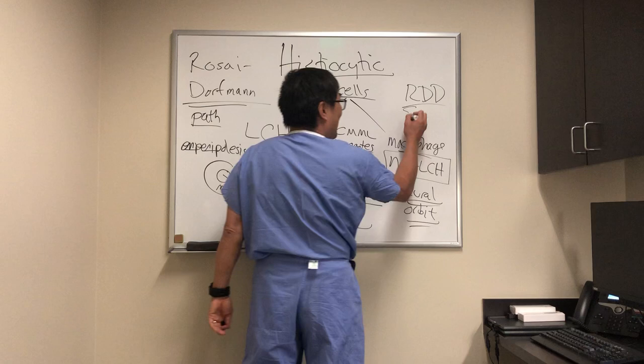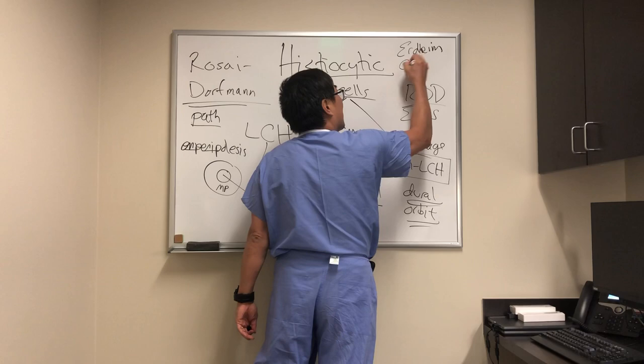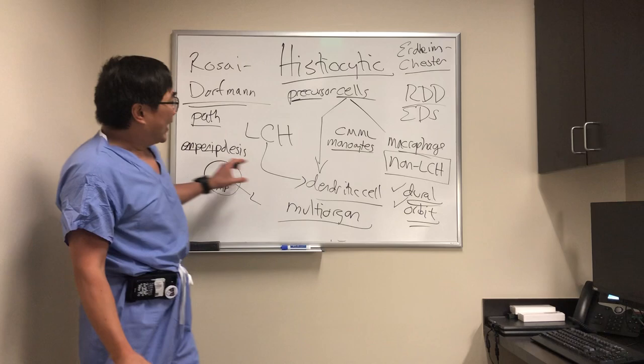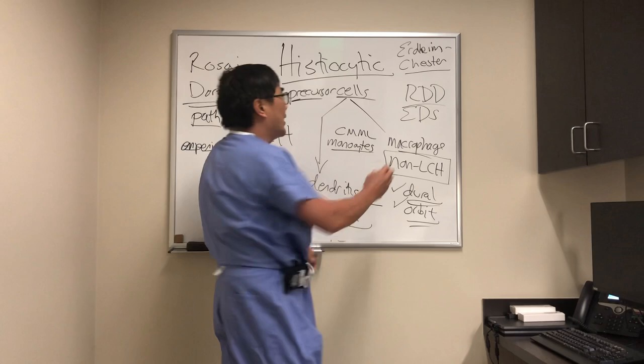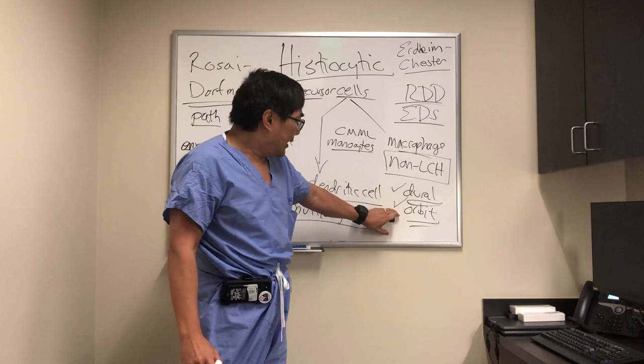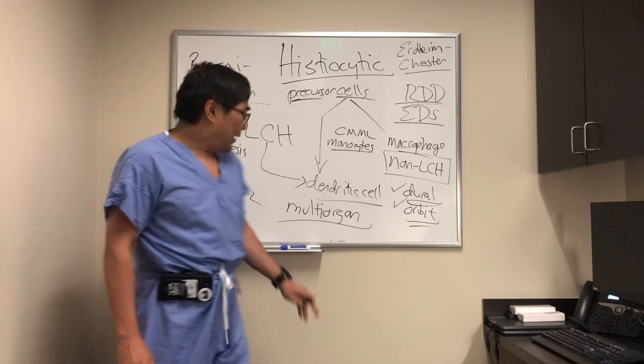The other form is called Erdheim-Chester disorder. Erdheim-Chester can also produce dural-based lesions and orbital lesions. It does not have emperipolesis on pathology, and it does not have massive lymphadenopathy. Erdheim-Chester looks slightly different from Rosai-Dorfman, but you really need the pathology. Both share dural-based enhancing lesions and bilateral orbital masses. The only way to know which entity you're dealing with, however, is to biopsy.